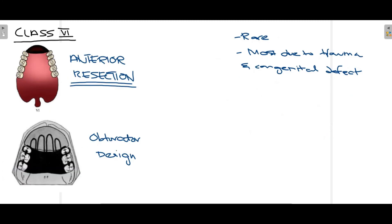Class 6 is anterior resection. The dark red region in the diagram shows the area that has been resected, while posteriorly teeth remain — in this case premolars and molars are present. Most of the hard palate is present and the soft palate is also present. Class 6 is rare and mostly occurs due to either trauma or a congenital defect. When designing the obturator, support is taken from the abutment teeth — premolars and molars — and this anterior defect is closed.